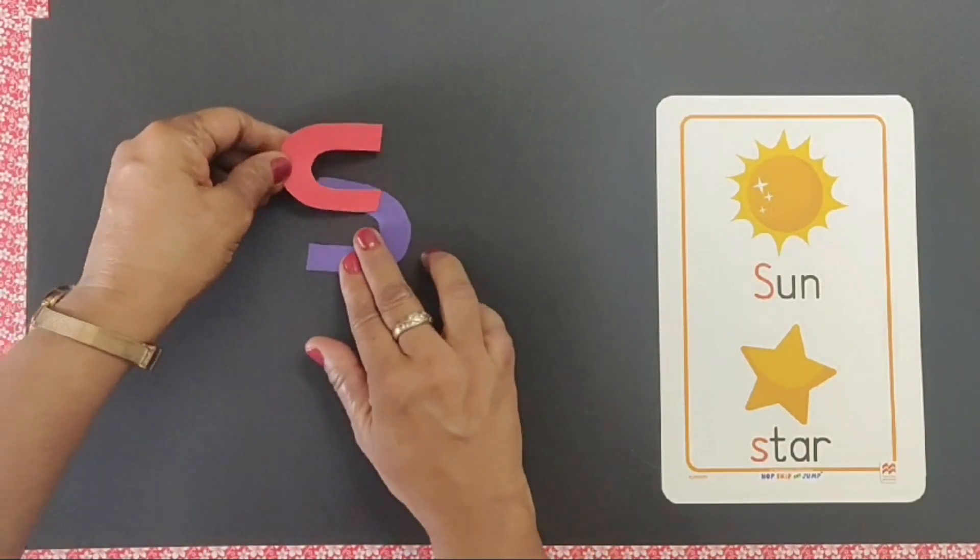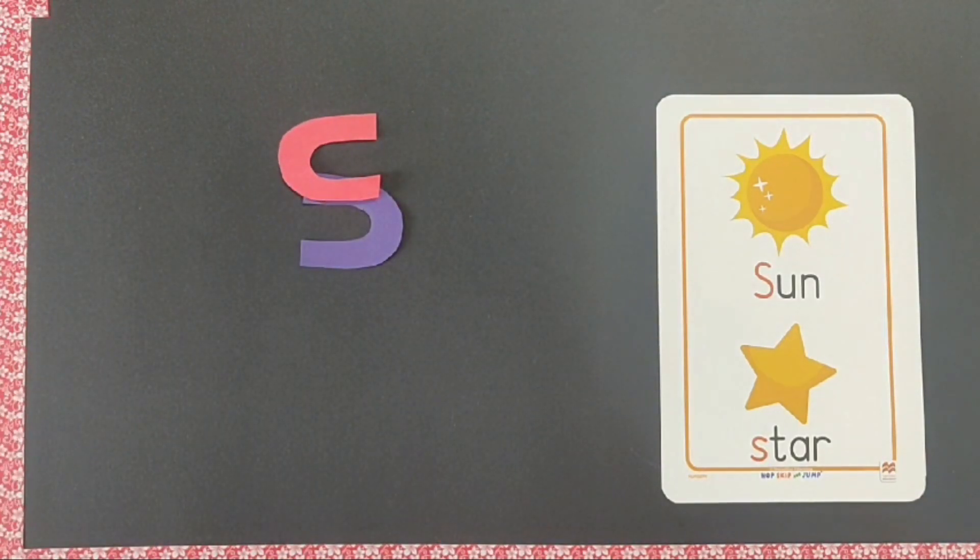Take one strip like this, overlap it. This is S. S says suh, S for sun.